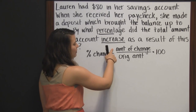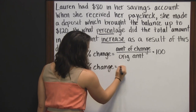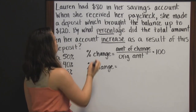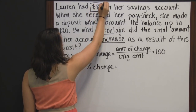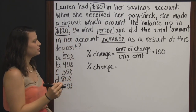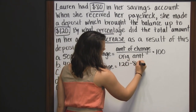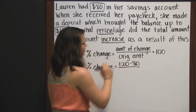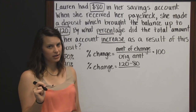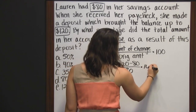First, we need to find our amount of change. The amount of change is found by subtracting the two amounts. She started at $80, and her balance went up to $120. So the change is 120 minus 80, divided by the original amount — what she had in her account before she made her deposit, the $80 — and then we multiply that by 100.